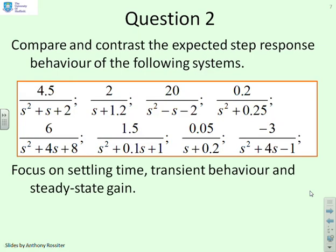Question 2. The difference from Question 1 is that the systems are now a bit more complex, including quadratic denominators rather than just first order. We're again asking you to look at settling time and steady state gain, but we've added the aspect of transient behaviour, because as soon as you go to quadratic poles there are more involved transients than with first order systems. Now's the time to pause before I go through the solutions.